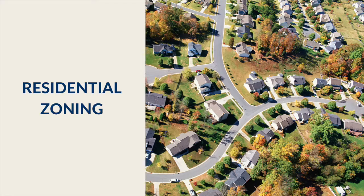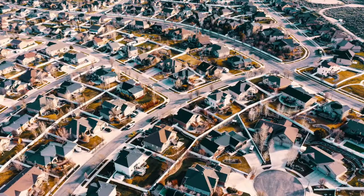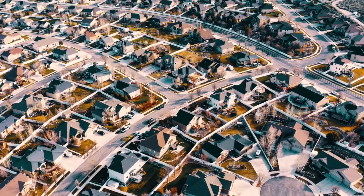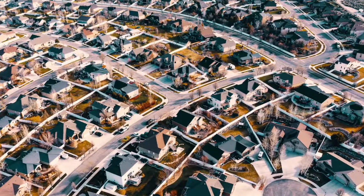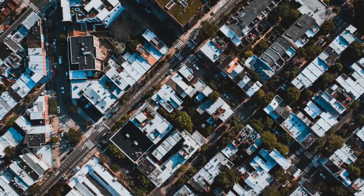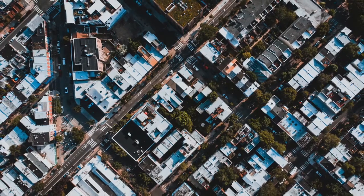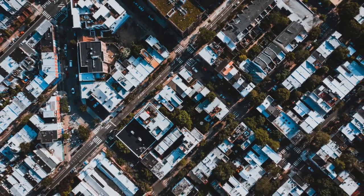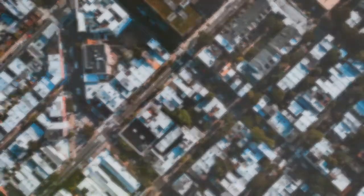Residential zoning clearly devotes that land specifically for the use of residential purposes, but often has restrictions that go beyond that. Residential zoning can often cover the issue of whether or not a mobile home can be placed on the property, and can also place limitations on the amount of animals that are allowed at each residence.